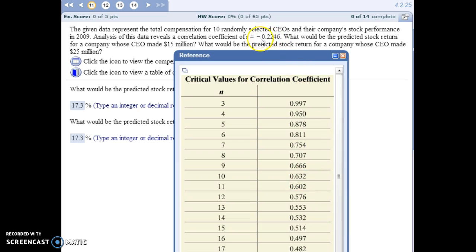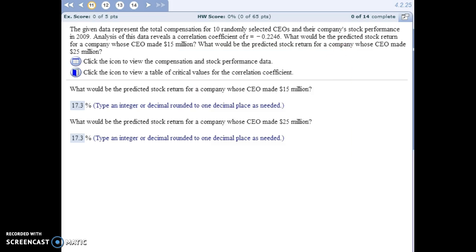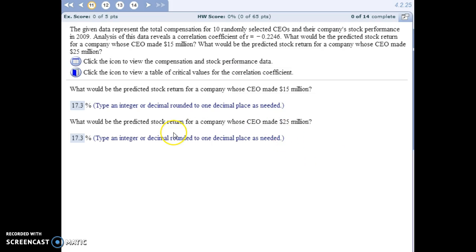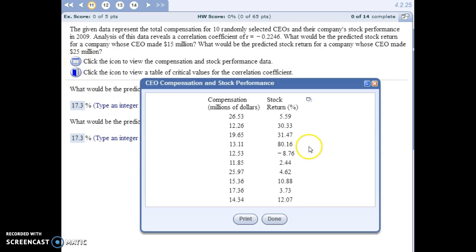So if you take the absolute value of this, 0.2246 is less than our critical value, which would lead us to determine that there is no linear relationship between our two variables. If you look on page 197 of the text, it reminds you how to test for a linear relationship. And since there's no relationship between our variables, we're going to use just the average, the mean stock return to do our prediction.